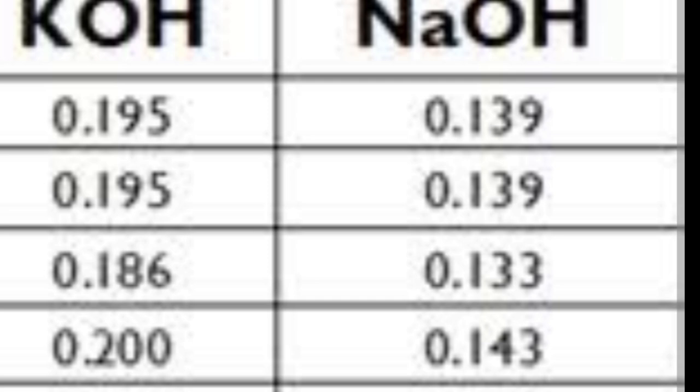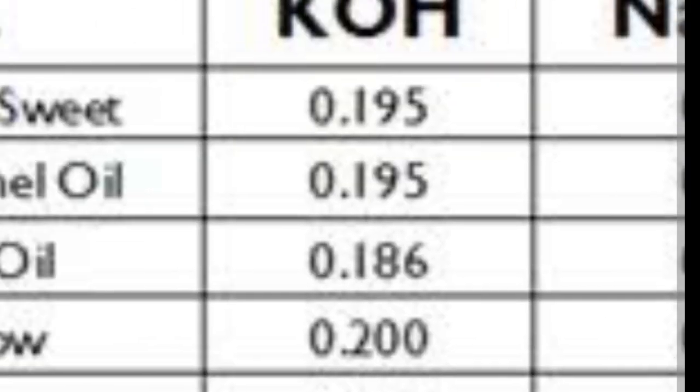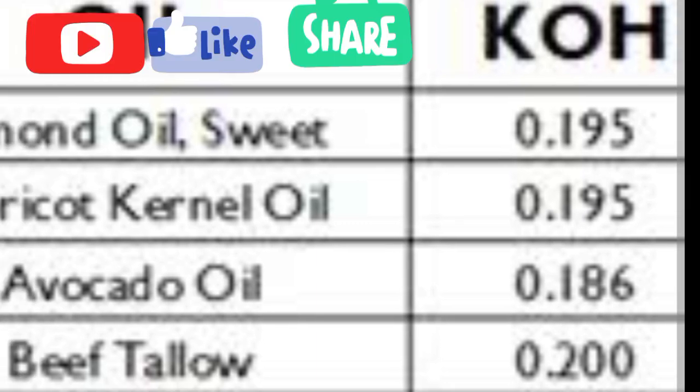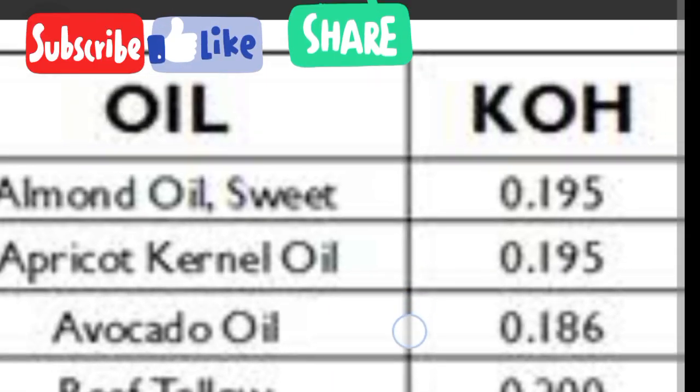0.143 kg of caustic soda for beef tallow. Now I have this value — what do I do next?